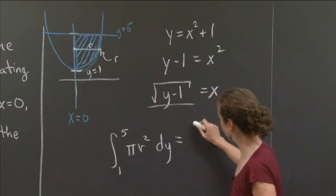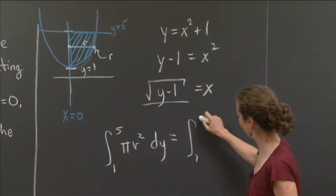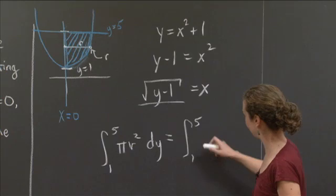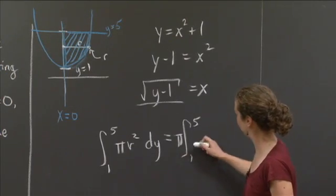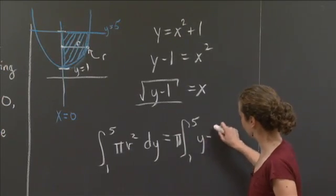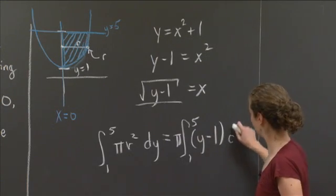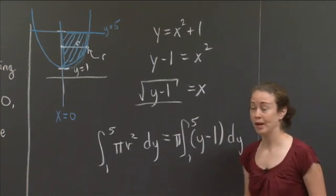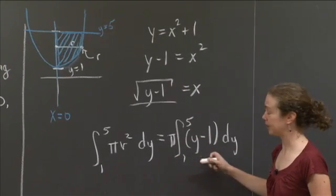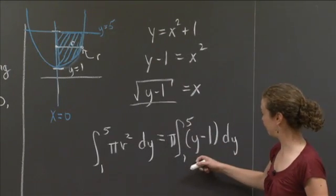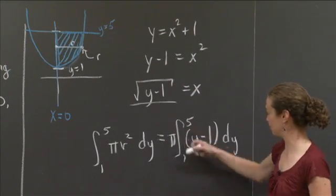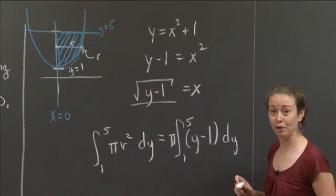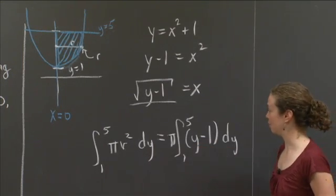So what I'm really interested in integrating is the integral from 1 to 5 of, let me put the pi outside, because who cares. Pi times that integral, y minus 1 dy. And if I actually evaluate this, figure out if I actually take the integral, use my rules for polynomials, I can get a numerical value.